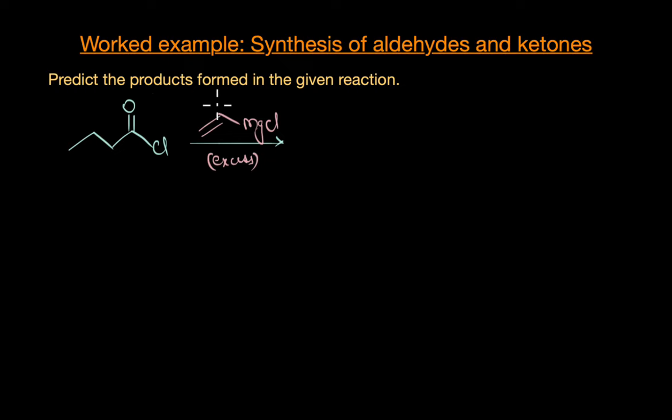So the first step is obviously the nucleophilic attack of our R minus. It attacks the carbonyl carbon and the pi electrons get delocalized onto our electronegative oxygen atom, giving us this intermediate. Now here the C double bond O gets restored because chlorine is a very good leaving group.